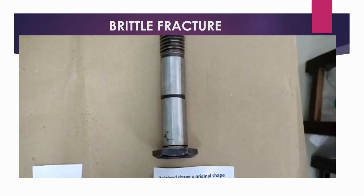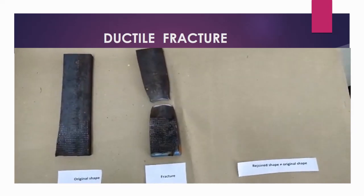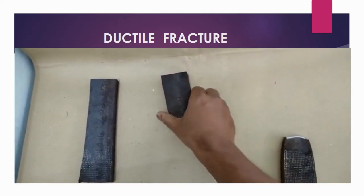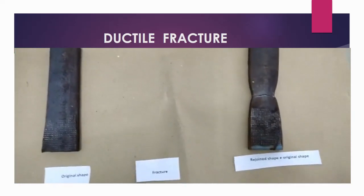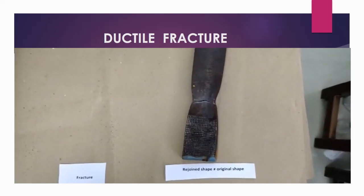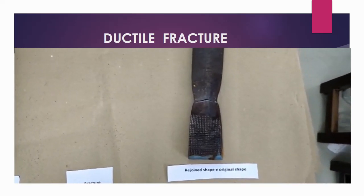So the rejoined shape is equivalent to the original shape. For ductile fracture, a mild steel plate is taken for tensile testing. The mild steel plate is tested and it fractures into two halves.